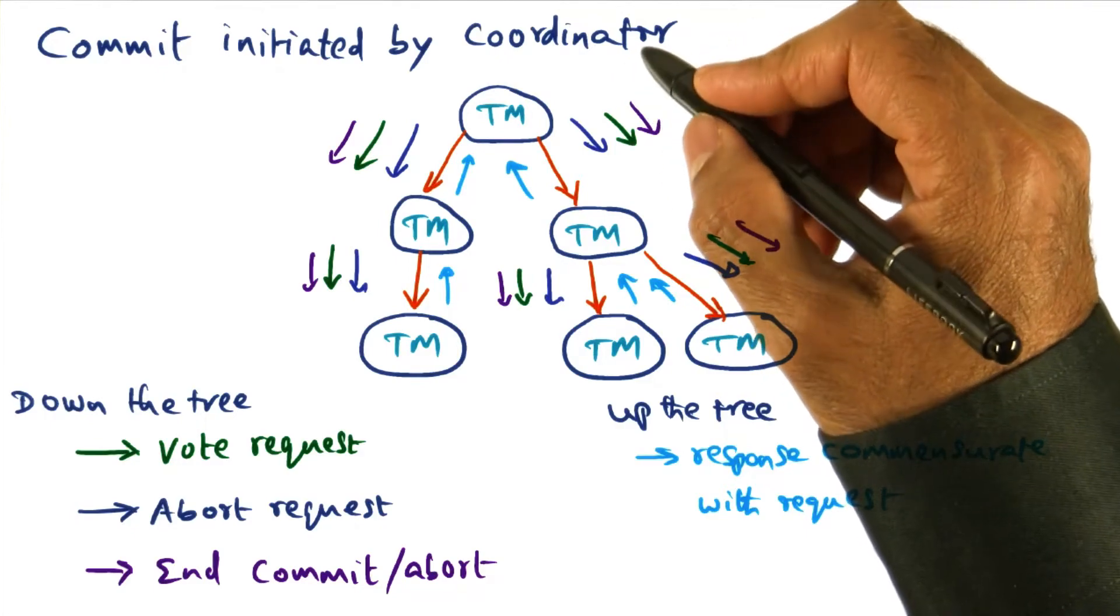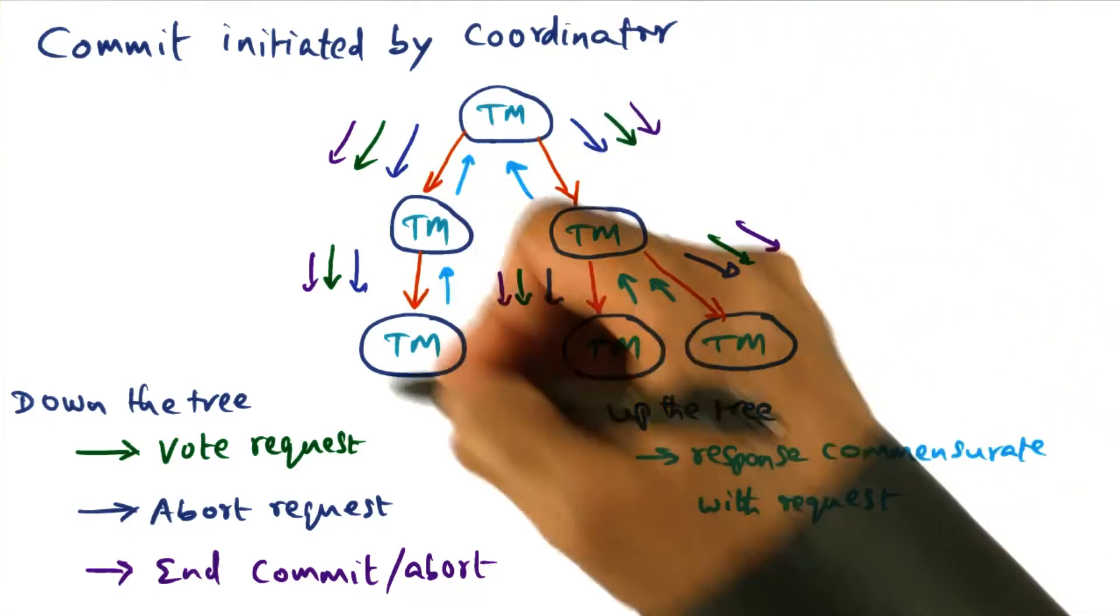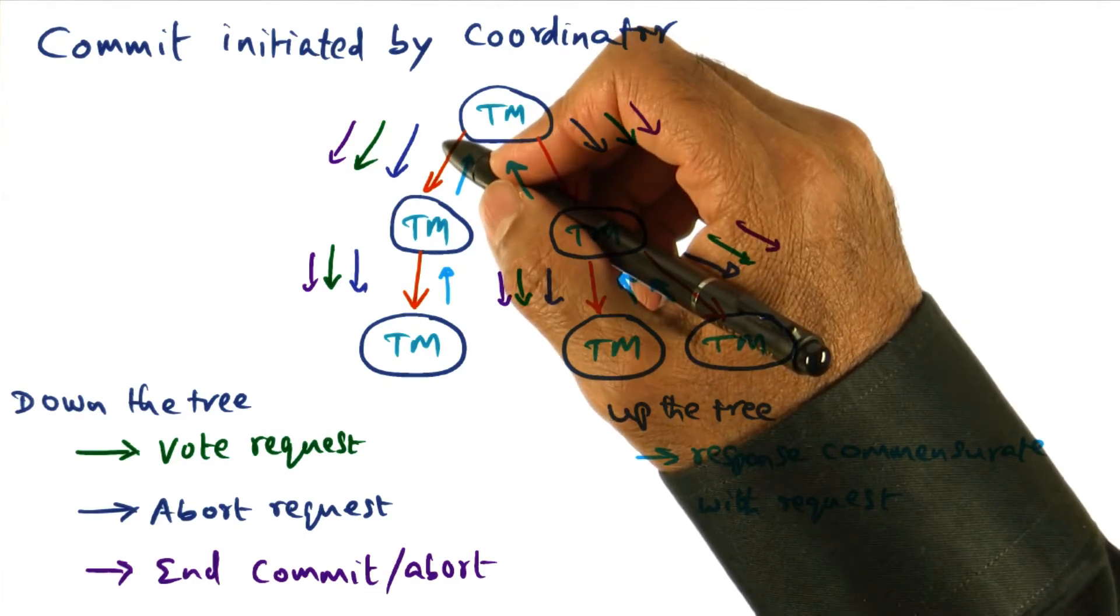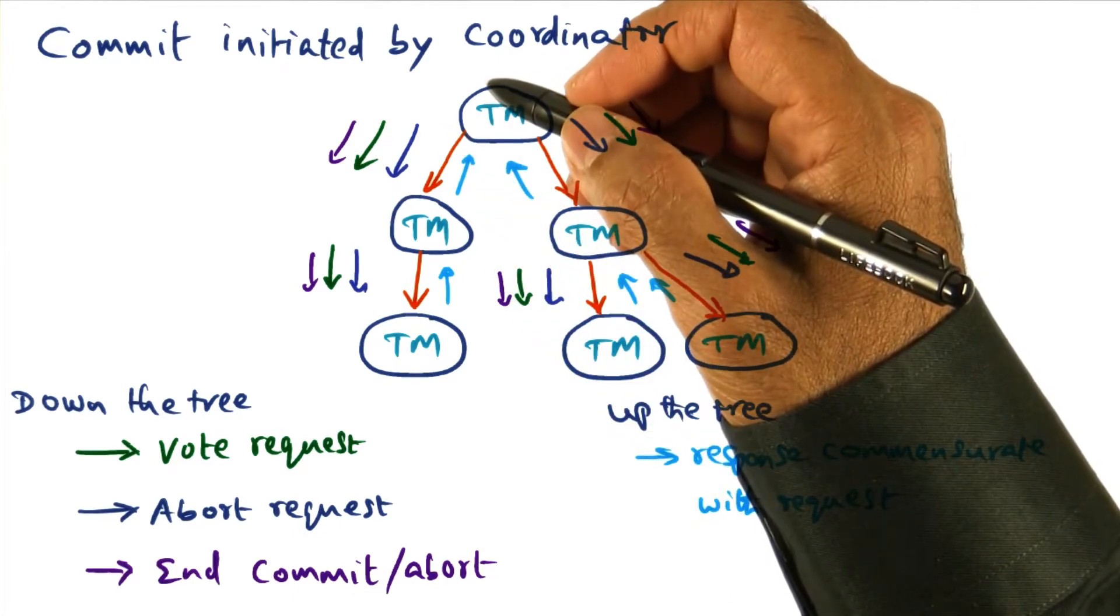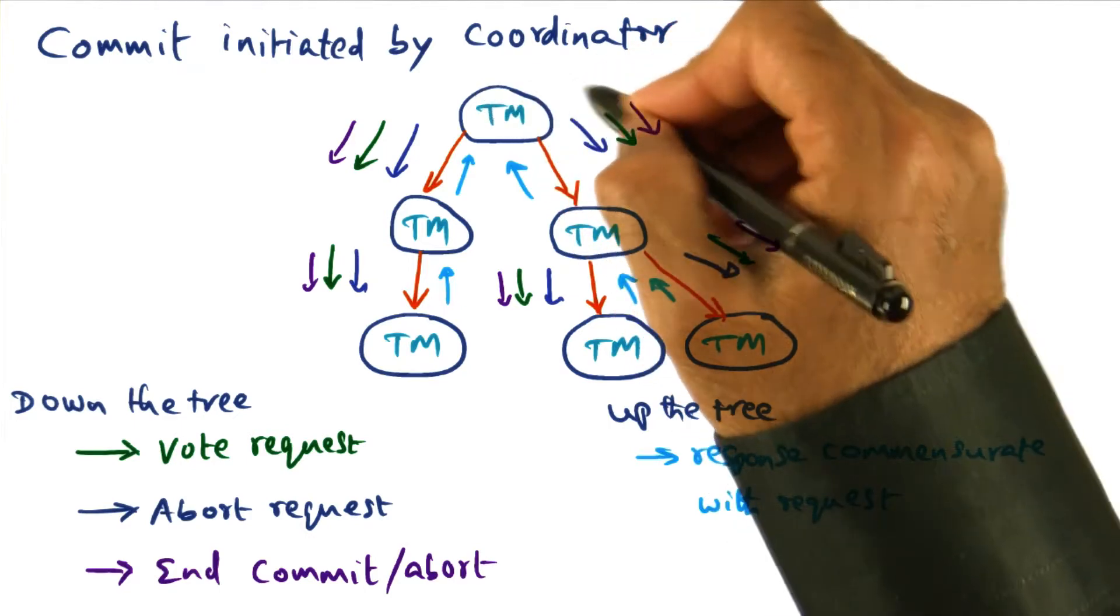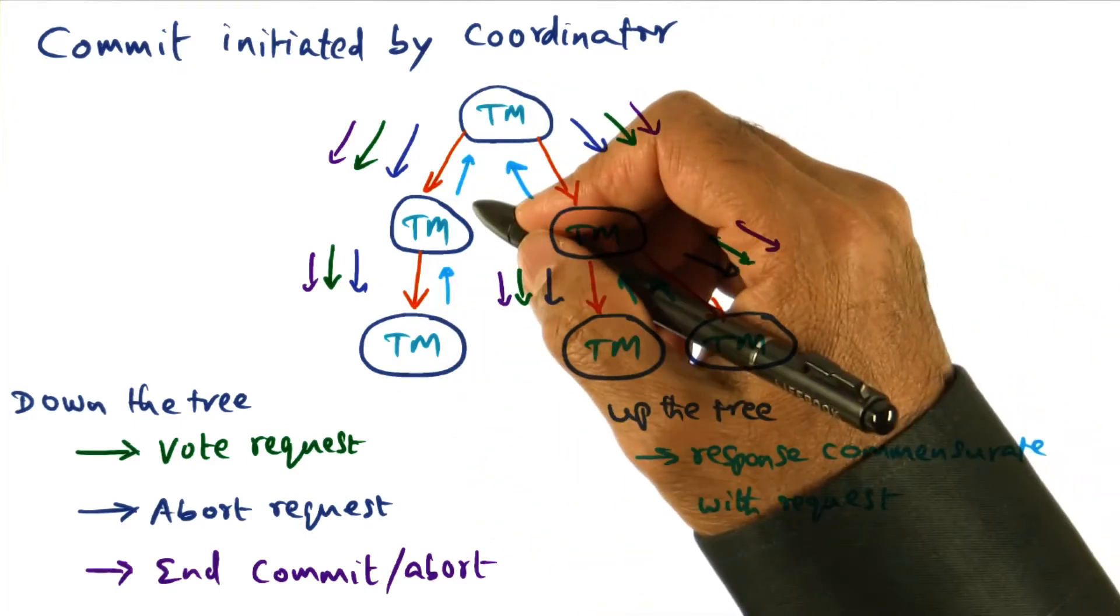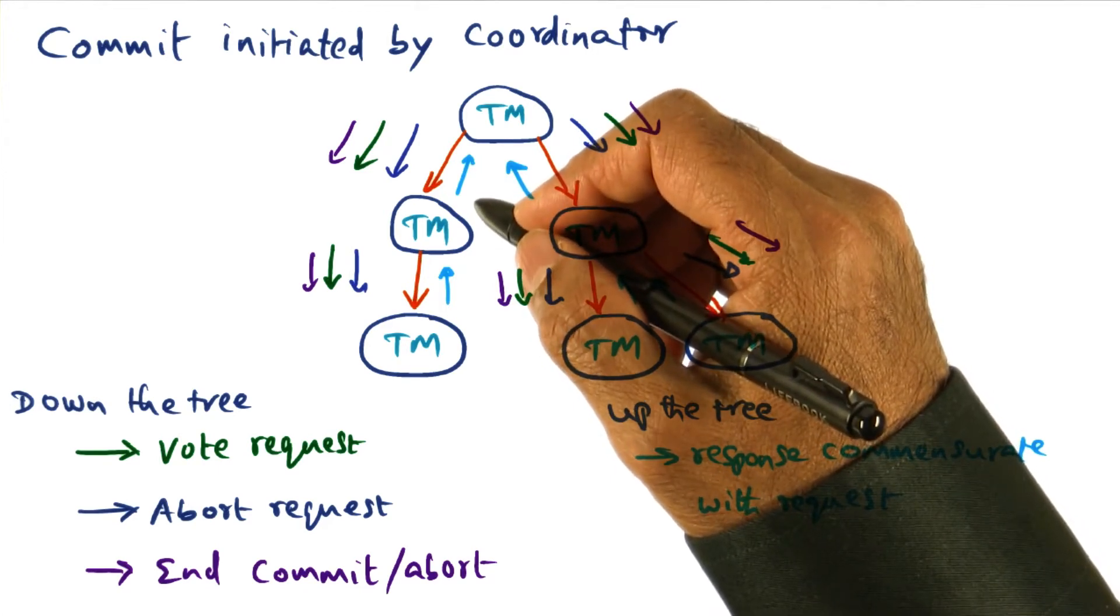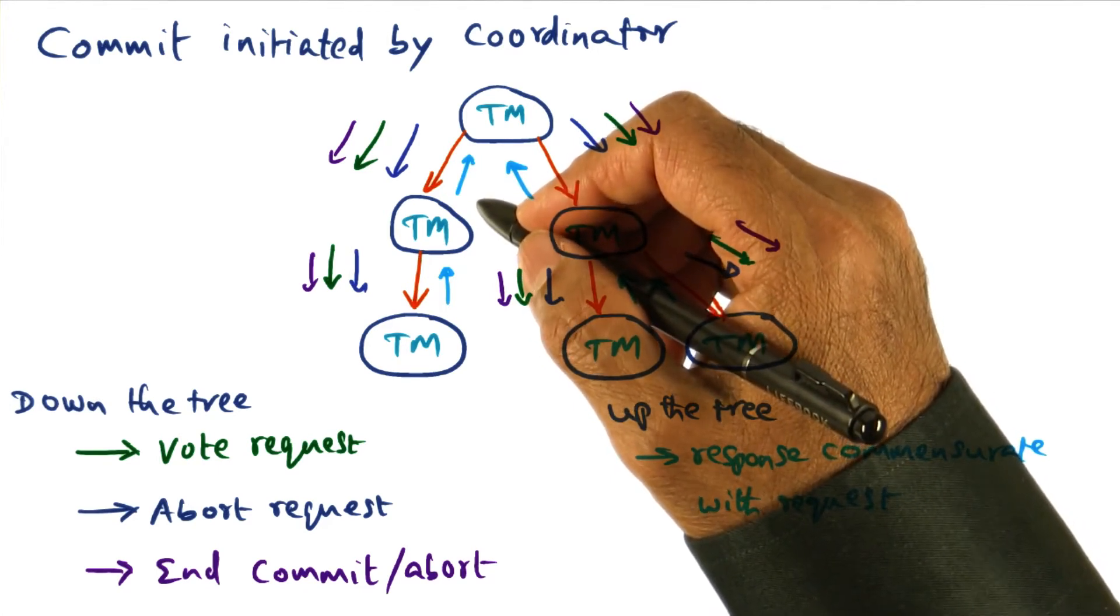When the client-server relationship that resulted in the formation of a transaction tree completes its action, for example, let's say the transaction tree got created as a result of a client opening a file, doing a bunch of reads of the file, writes of the file, and finally closes the file.